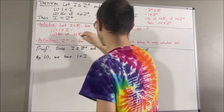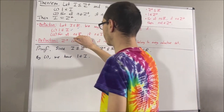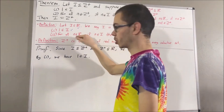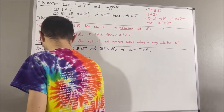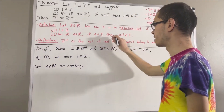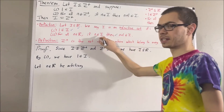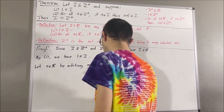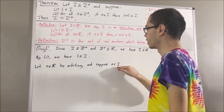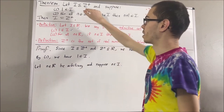Now let's verify the second condition. We're trying to prove a statement about every real number, so let's consider an arbitrary real number — I'll call it n. From here, we want to prove: if n is an element of i, then n plus 1 is an element of i. So, let's suppose that n is an element of i. Now, since n is an element of i and i is a subset of the positive integers, that tells us n is a positive integer.